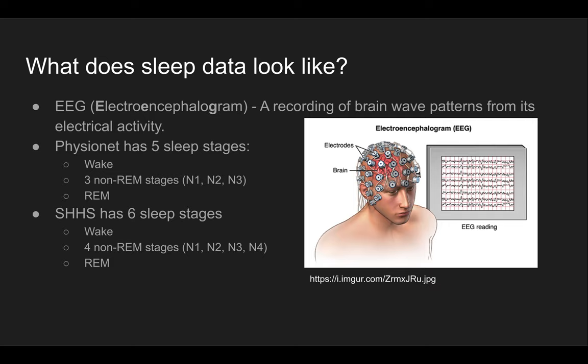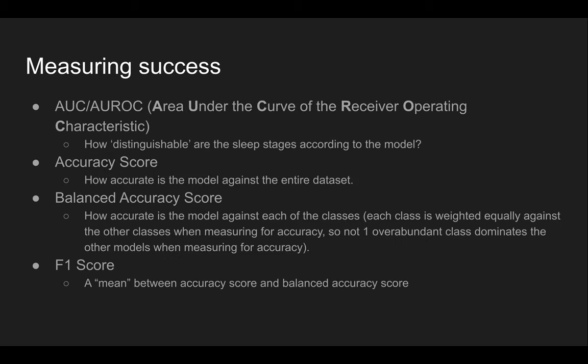Physionet has five sleep stages ranging from wake, three non-rapid eye movement stages, and the rapid eye movement stage itself, whereas the SHHS dataset has six sleep stages ranging from wake, four non-rapid eye movement sleep stages, and the rapid eye movement stage itself. We have four success metrics: area under the curve, accuracy score, balanced accuracy score, and the F1 score. We use the AUC score particularly for our neural network models, whereas we use accuracy, balanced accuracy, and the F1 scores for the shallow machine learning methods.